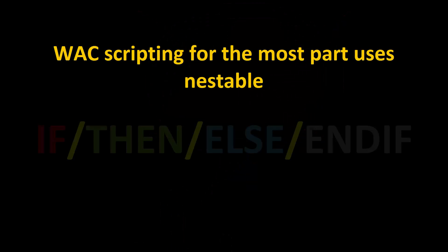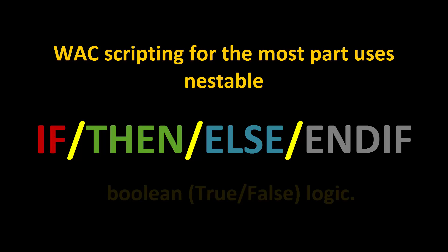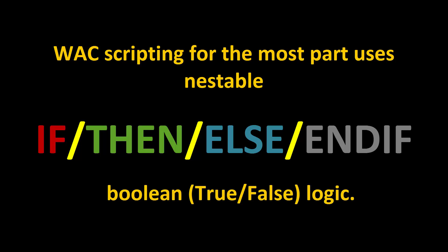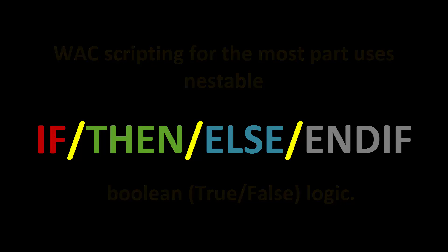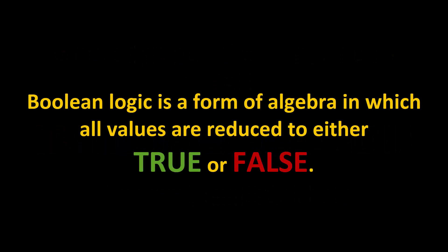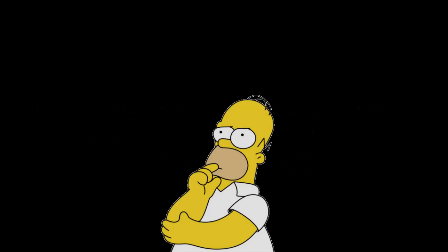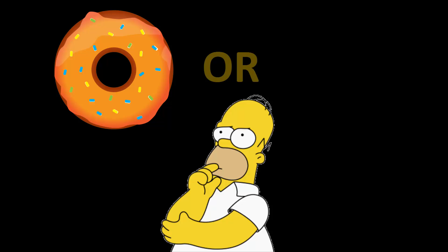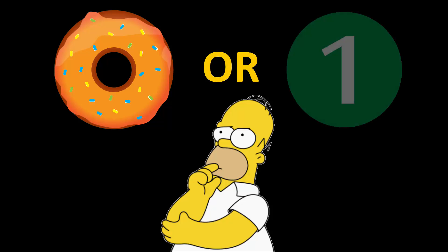WAC scripting, for the most part, uses nestable if, then, else, and if — which is basically Boolean true or false logic. Boolean logic is a form of algebra in which all values are reduced to either true or false: zero or one.